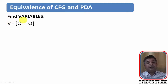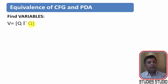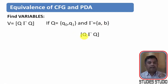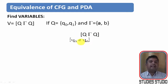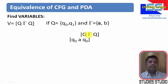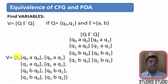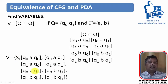Now let us see how we can find a variable. A variable is found in the form (Q, Tau, Q), where Q is a state and Tau is an alphabet from the stack. If Q contains two states Q-naught and Q1, and Tau contains two alphabets A and B, then variables are generated by taking one element from Q, one from Tau, and one more from Q. So we will have variables like Q-naught A Q-naught, Q-naught A Q1, and so on, giving us nine variables in total along with the starting symbol.